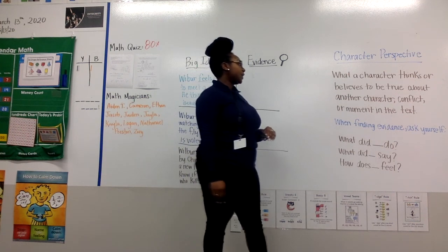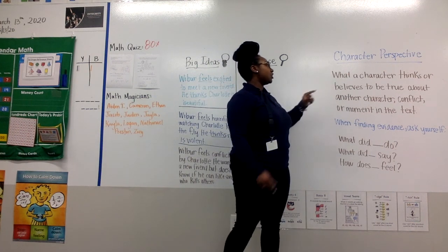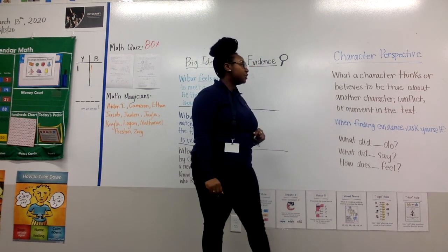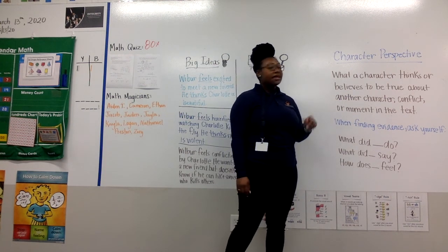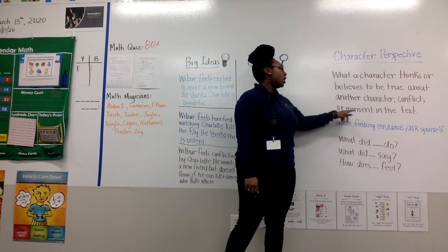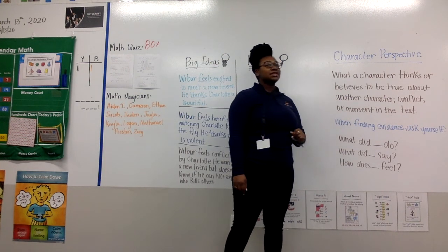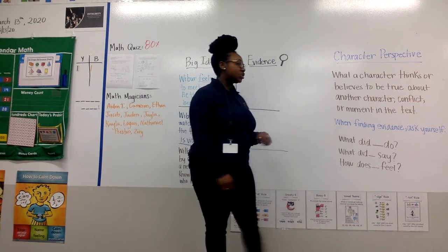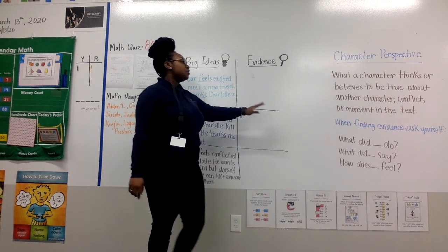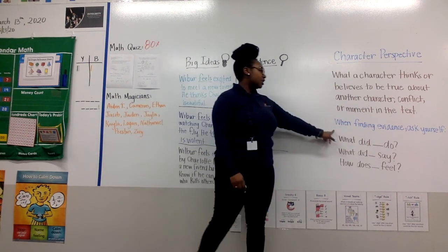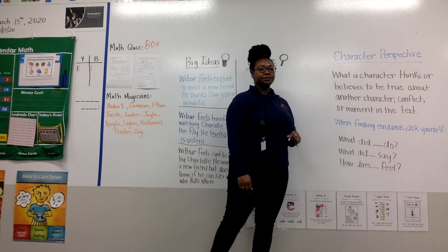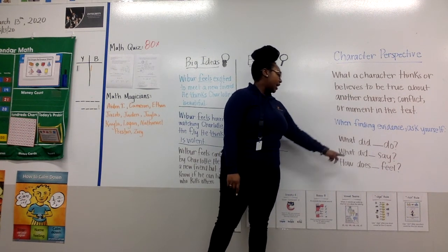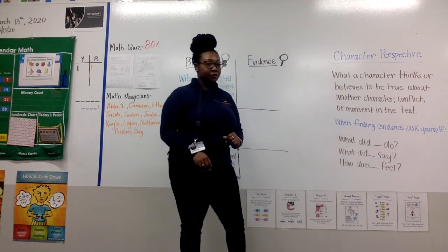We know that character perspective is what a character thinks or believes to be true about another character, the conflict, or a moment in the text. And when you're looking for evidence, just like we've been doing, you need to ask yourself: What did the character do? What did the character say? And how does the character feel?